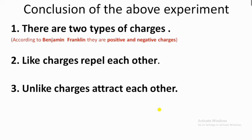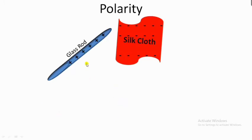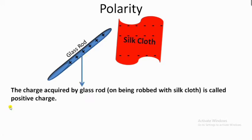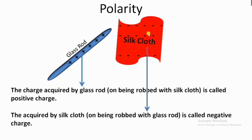Polarity is the name given to the charge or nature of the charge. The charge acquired by the glass rod when rubbed with silk cloth is called positive charge. Similarly, negative charge is the charge acquired by the silk cloth when rubbed with the glass rod.